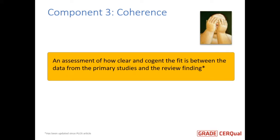Moving on to the third component, which is coherence — this is an assessment of how clear and cogent the fit is between the data from the primary studies and the review finding. I just want to point out for those who looked at the CERQual paper we published that this definition has changed a bit since then.